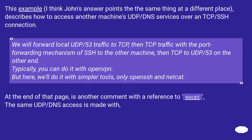This example — and John's answer points to the same thing at a different place — describes how to access another machine's UDP/DNS services over a TCP/SSH connection. We will forward local UDP/53 traffic to TCP, then use SSH's port forwarding mechanism to the other machine, then convert TCP back to UDP/53 on the other end. Typically you can do it, but here we'll do it with simpler tools: only OpenSSH and Netcat.